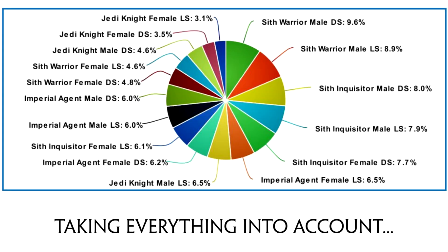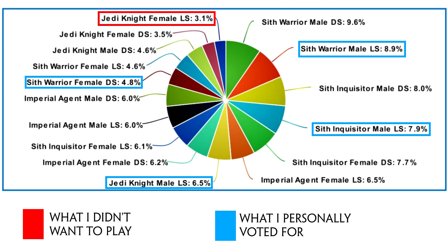And finally we come to the real and most messy chart of the entire vote. But before I start discussing it, let me tell you what I picked personally from all the options in the poll. I voted for the male Light Side Sith Inquisitor and the male Light Side Sith Warrior. Then I thought I should also vote for a female character and a Republic character as well, so I also picked the male Light Side Jedi Knight and the female Dark Side Sith Warrior. So these were the four options that I picked.